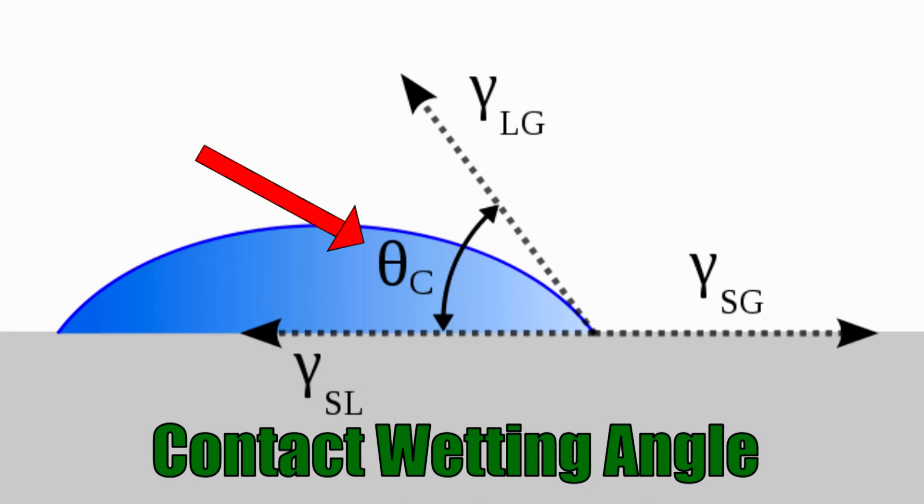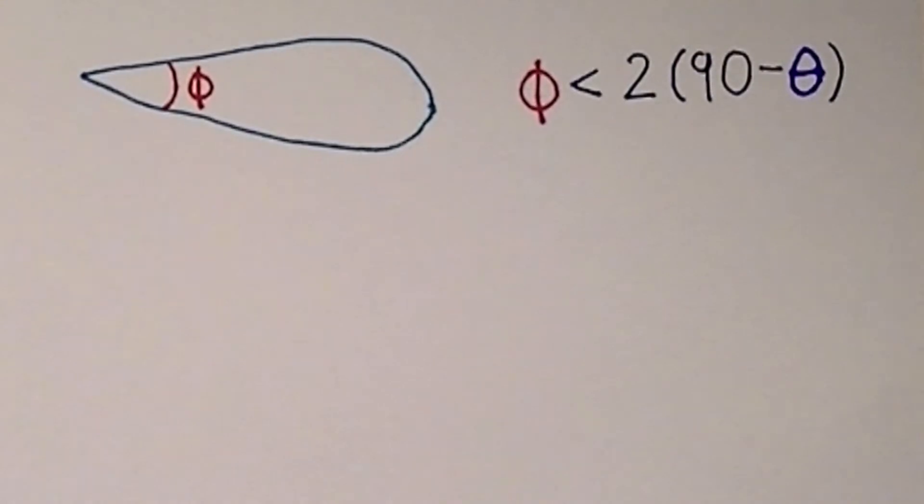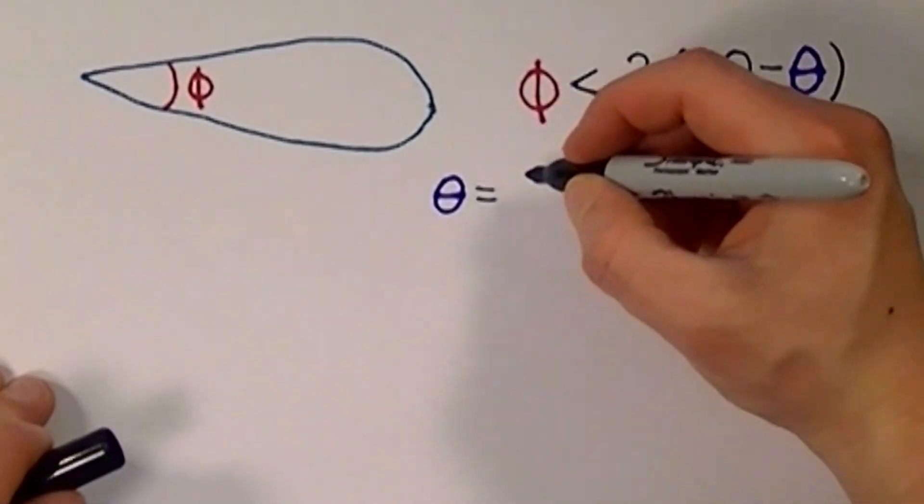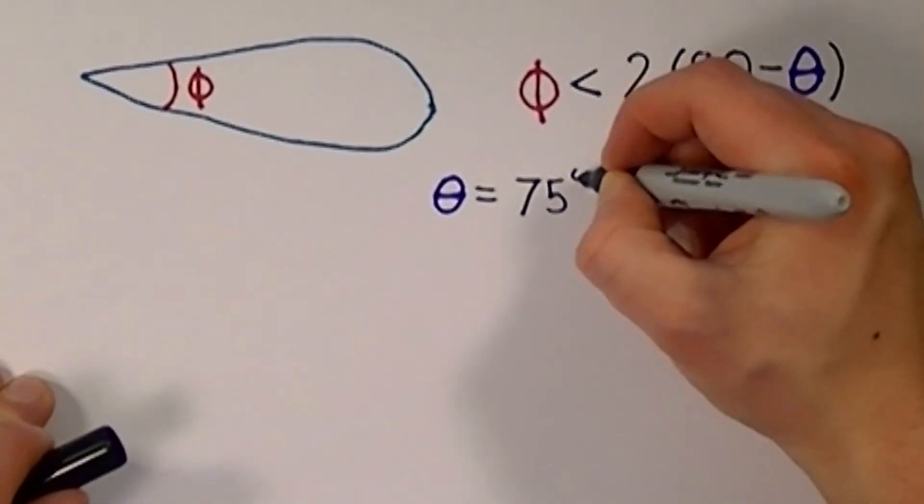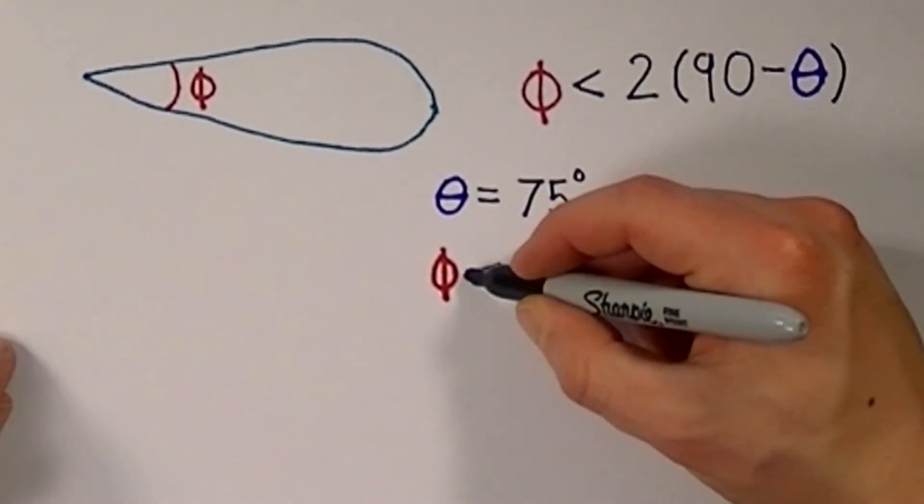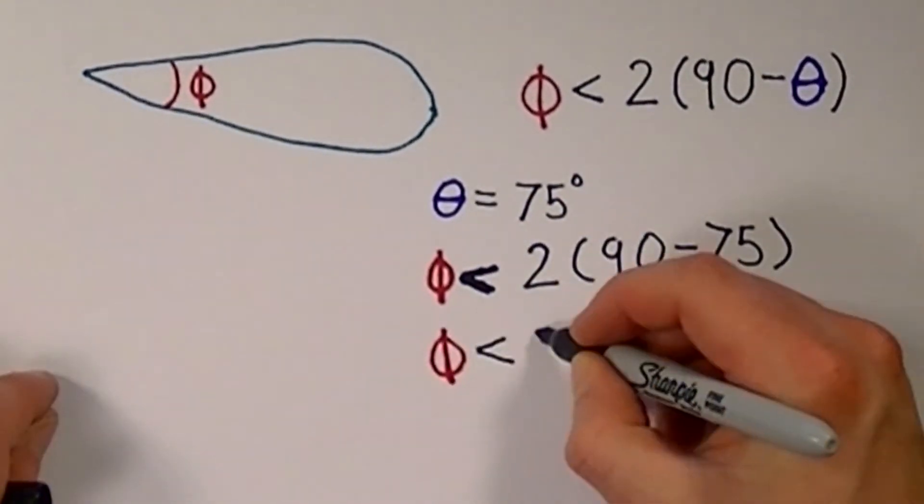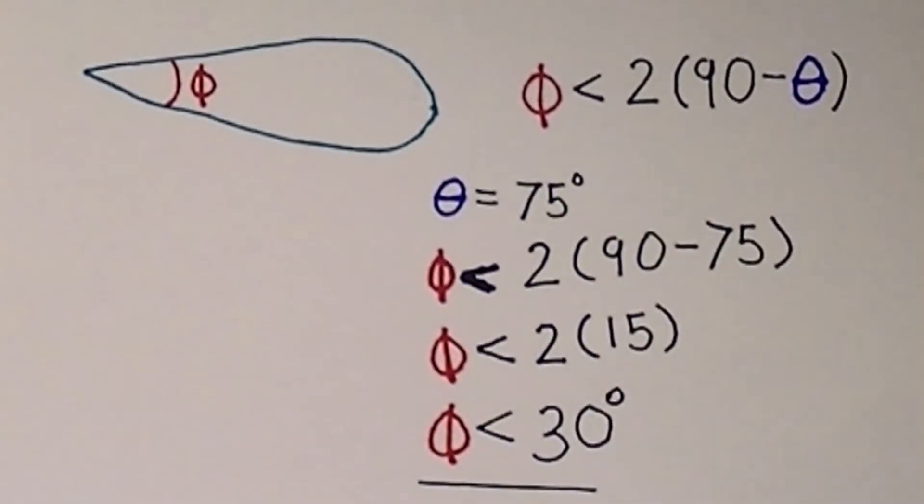The contact wetting angle simply being the angle which a droplet will make to the particular surface that it's resting upon. By looking at the contact wetting angle of water on plastic, which happens to be about 75 degrees, we can do some simple math to determine that the angle needed to achieve proper water wicking is less than 30 degrees.